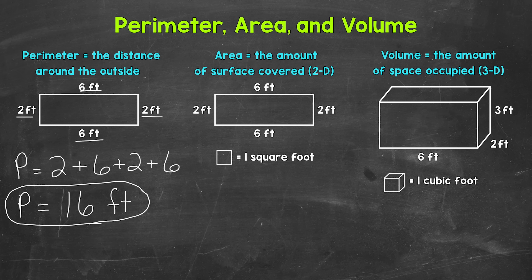We measure area in square units. For our example, we have a rectangle and we are working with feet for our unit of measure. What we need to do is see how many square feet this rectangle covers. This is a square foot right here — it is one foot by one foot. So we're going to see how many square feet this rectangle covers.